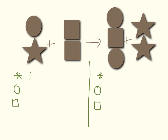The first thing we need to do is just count them. So on the left side I have one star, I have one circle, and I have two squares. On the right side I have two circles, I have two stars, and I have one square. We can see this isn't balanced: on the left I have one star and on the right I have two stars; one circle versus two circles; two squares versus one square. So I need to do something to make it balanced.